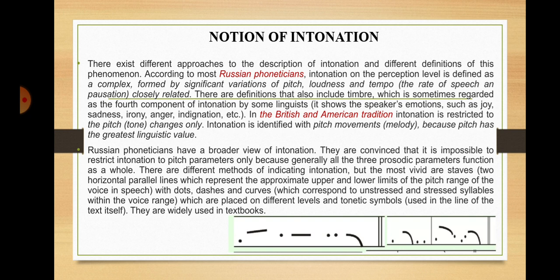There exist different approaches to the description of intonation and different definitions of this phenomenon. According to most Russian phoneticians, intonation on the perception level is defined as a complex formed by significant variations of pitch, loudness, and tempo — that is, the rate of speech — a position closely related. There are definitions that also include timbre, which is sometimes regarded as the fourth component of intonation by some linguists. It shows the speaker's emotions such as joy, sadness, irony, anger, indignation, etc.